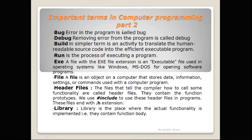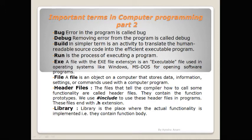That executable program is a binary file. The next term is Run. Run is the process of executing the program. When you write a program, you want to see the output. Before running, we compile it — but compiling does not show you the output of the program. So, the run process executes your program.